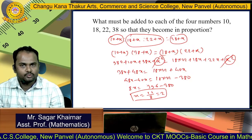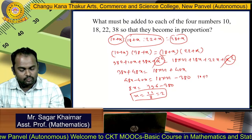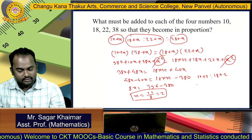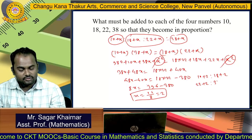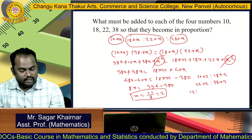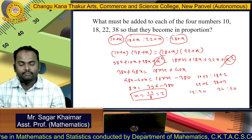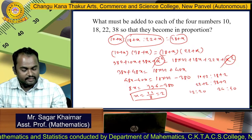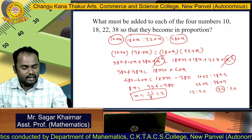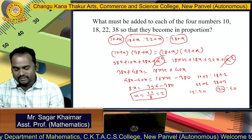Therefore X = 16/8 = 2. So the value of X is 2. We can verify: (10+2):(18+2) = 12:20 and (22+2):(38+2) = 24:40. Since 24 = 2×12 and 40 = 2×20, all four numbers are in proportion.